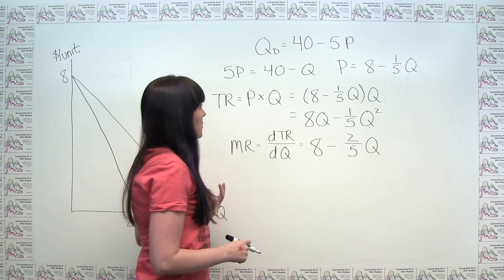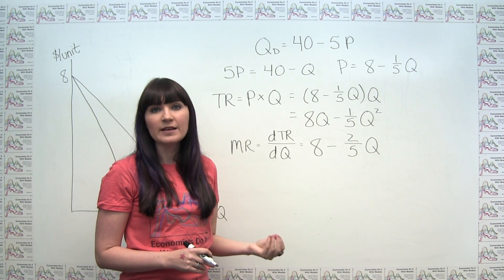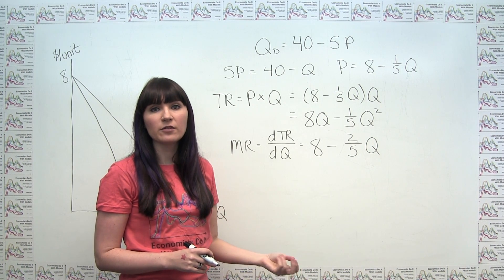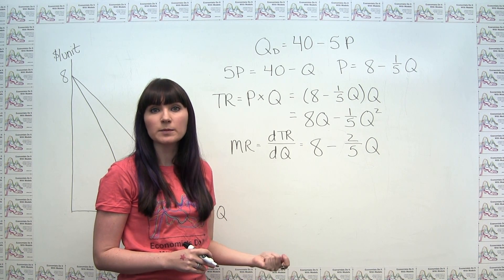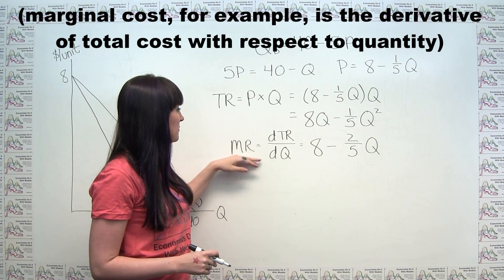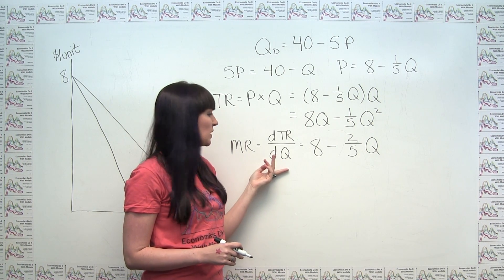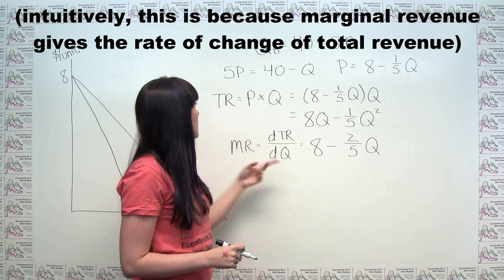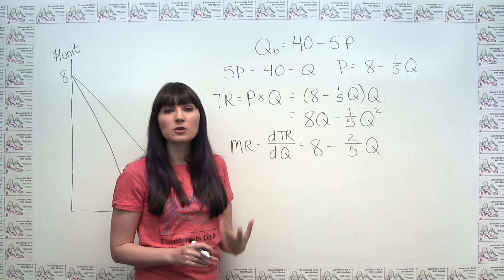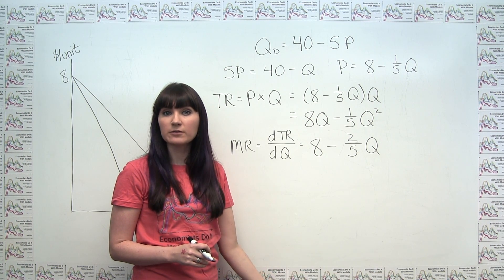Marginal revenue is the derivative of total revenue with respect to quantity. So we need to come up with a formula for total revenue in terms of quantity so that we can actually take the derivative.